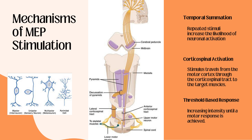Transcranial electrical stimulation, TES, and transcranial magnetic stimulation, TMS, directly or indirectly excite these pyramidal neurons, leading to signal transmission down the corticospinal tract. Lastly, MEP is reliant on a threshold-based response, meaning that intensity is gradually increased in order to reach a reliable motor response.